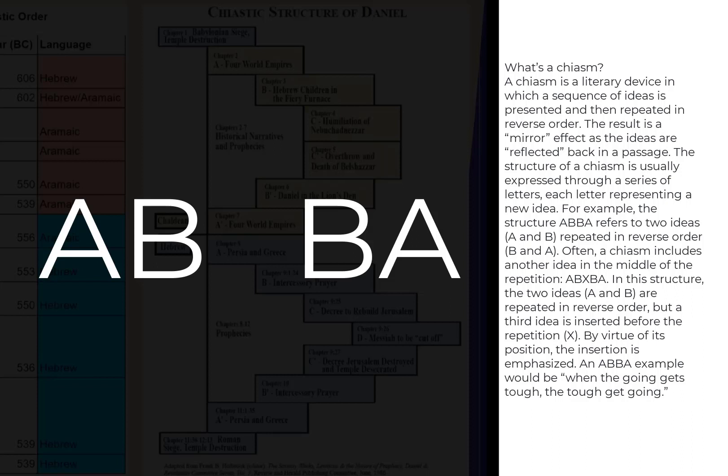Often the chiasm includes another idea in the middle of the repetition, so it would be A-B-X-B-A — a new idea inserted in the center. In this structure the two ideas A and B are repeated in reverse order, but a third idea is inserted before the repetition.